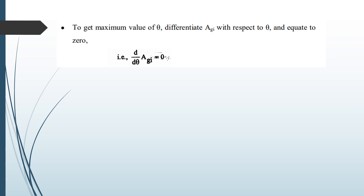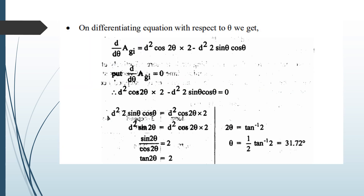Differentiating: d/dθ (Agi) = d²·cos 2θ · 2 − d²·2·sin θ·cos θ = 0. You can pause this video and calculate on your own. This simplifies to: 2d²·cos 2θ − d²·sin 2θ = 0.